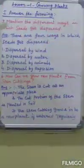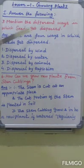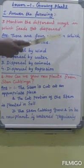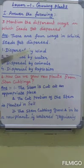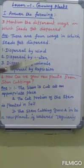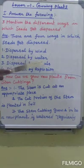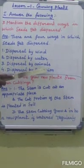Third question: Mention the different ways in which seeds get dispersed. Answer. There are 4 ways in which seeds get dispersed. First one: dispersal by wind. Second one: dispersal by water. Third one: dispersal by animals. Fourth one: dispersal by explosion.